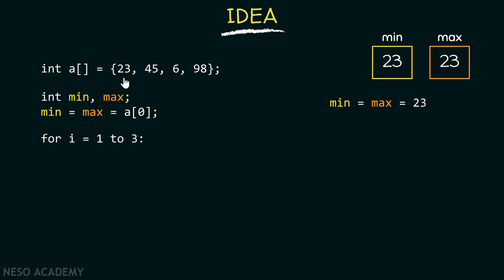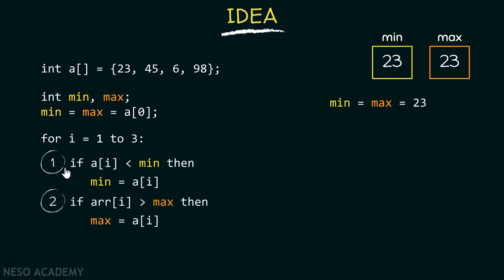It is important to note that this is not the actual program. I am writing this in a casual way, so instead of writing the for loop in actual C syntax, I am just writing it casually — this for loop simply runs from 1 to 3. We just want to understand the basic idea. In this for loop, we have two steps: in the first step we find out the minimum value, and in the second step we find out the maximum value.